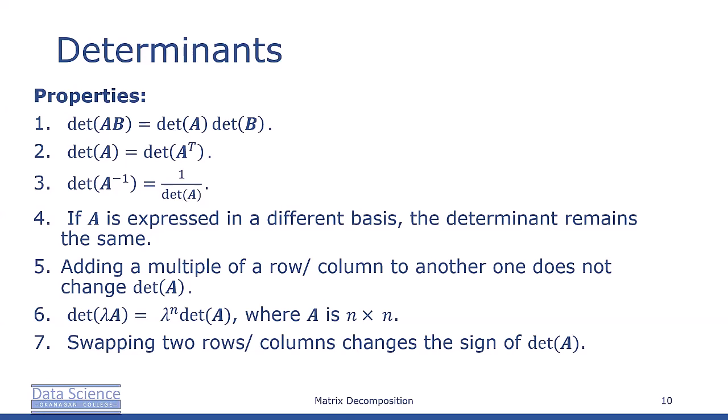Adding a multiple of a row or column to another does not change det(A). For scaling, det(λA) = λ^n det(A). Swapping two rows or columns changes the sign of the determinant.